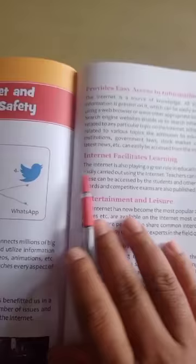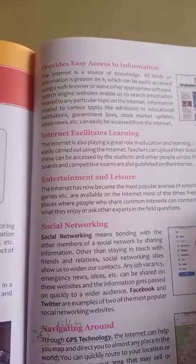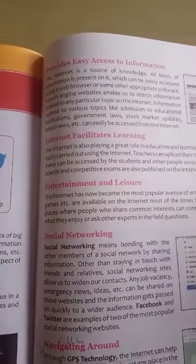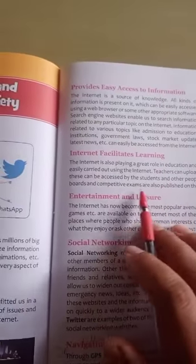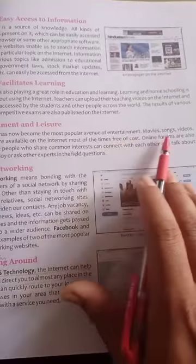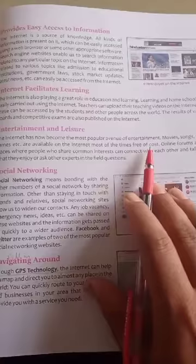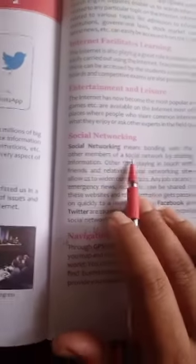Information related to various topics like admissions to educational institutes, government laws, stock market updates, and latest news can be easily accessed from the internet. The internet has now become the most popular avenue of entertainment — movies, songs, videos, and games are available on the internet, most of the time free of cost.